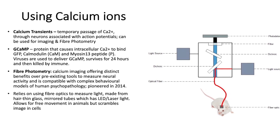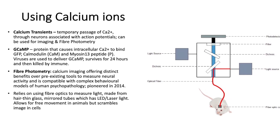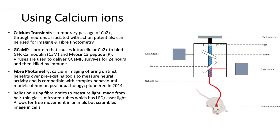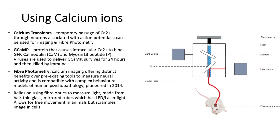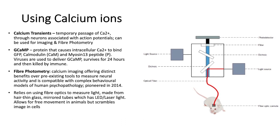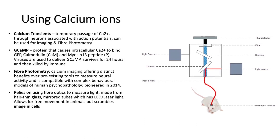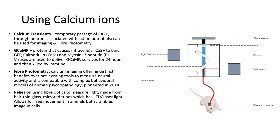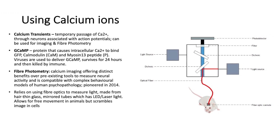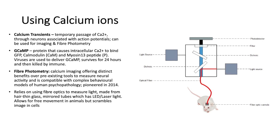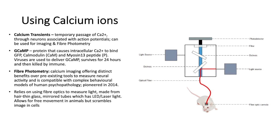Through these, we can use fiber photometry, which is a type of calcium imaging technique that offers distinct benefits over pre-existing tools in measuring neural activity and is compatible with complex behavioral models in human psychopathology. This was pioneered in 2014. It relies on fiber optics to measure light made from paired glass and mirror tubes, which have LED or laser light. This technique allows for free movement in animals, but that scrambles the image in cells.